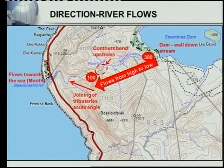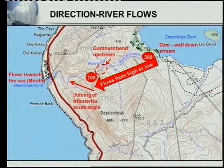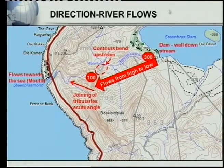Also remember the direction in which contours bend. Contours always bend upstream. You can see this contour is bending that way, bending again that way — so that means upstream, and the river is flowing in the other direction. Expect this question in your exam: in what direction does the river flow? You must know all these indicators to give correct reasons and get this question right.